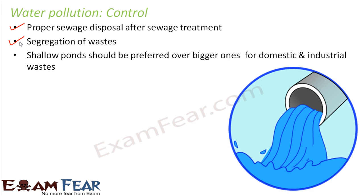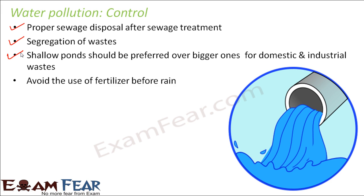Shallow ponds should be preferred over bigger ones for disposing domestic and industrial wastes. Shallow ponds have less water, so the amount of water that gets impacted will be less. Also, avoid the use of fertilizer before rain — fertilizer should be applied timely and should not be followed by irrigation or rainfall, so try not to apply fertilizer just before rain.